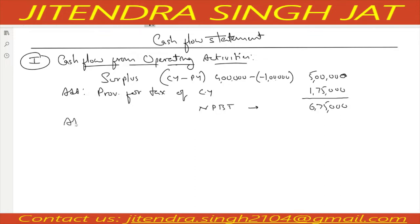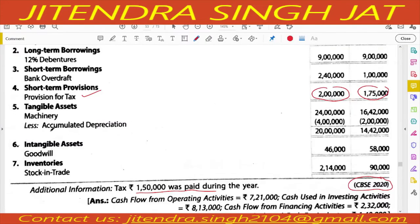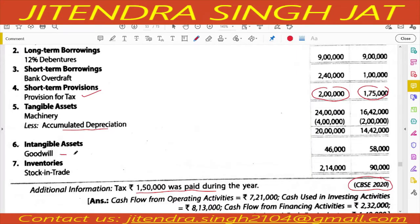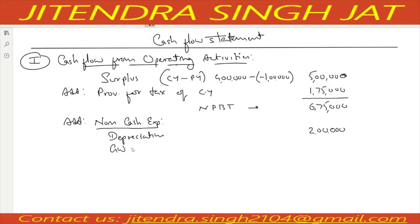Then we add non-cash expenses. Depreciation: accumulated depreciation difference — 4 lakh minus 2 lakh = 2 lakh depreciation for current year. Goodwill is given and decreasing from 58 to 46, so 58 minus 46 = 12,000 goodwill amortization.